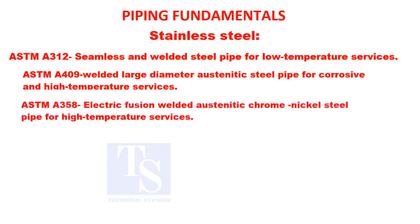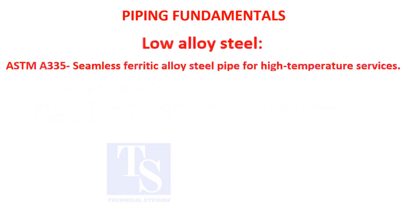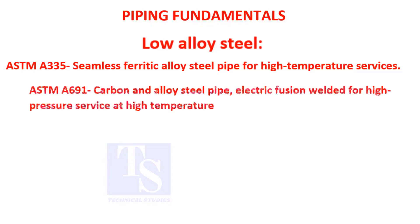ASTM A-106: electric fusion welded austenitic chrome nickel steel pipe for high temperature services. ASTM A-691: carbon and alloy steel pipe, electric fusion welded, for high pressure service at high temperature.